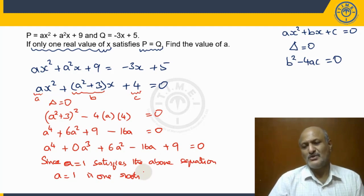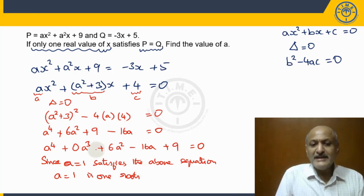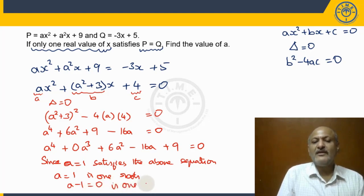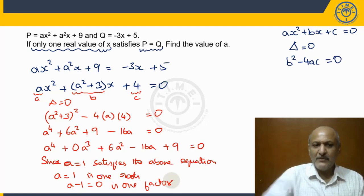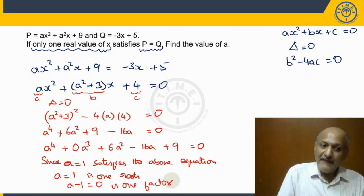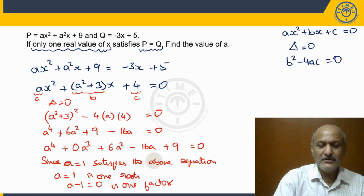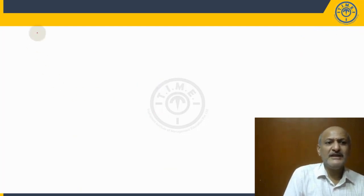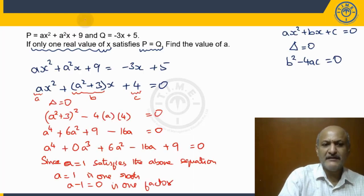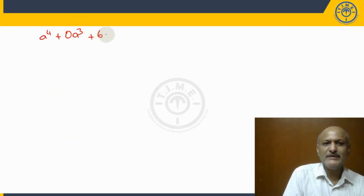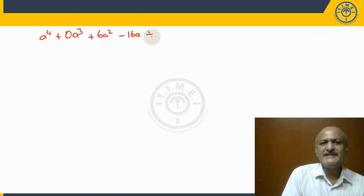Now we need to find the other roots as well. We can find them by synthetic division. Since 1 is one of the roots, (a - 1) is one factor of this 4th degree expression. Let's find the other factors by dividing this expression by (a - 1) using synthetic division. We write the coefficients in decreasing order: 1, 0, 6, -16, 9.